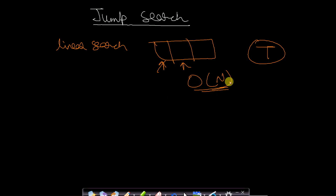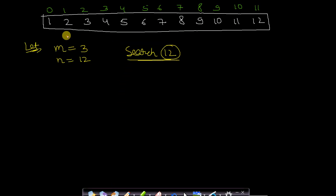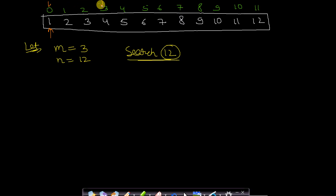Let us see how jump search helps us attain a time complexity lower than O(n). I have already made an example here — we have 12 elements from 1 to 12, and we have taken a block size of m with total number of elements as 12. Jump search works like this: it starts from element at index 0 and instead of checking every element, it takes a jump size — let's say the jump size is 3. It skips elements and goes from index 0 directly to index 3, then 3 to 6, then 6 to 9. It divides the entire array into blocks. Jump search always works if the array is sorted.